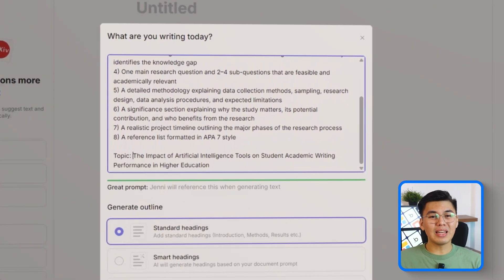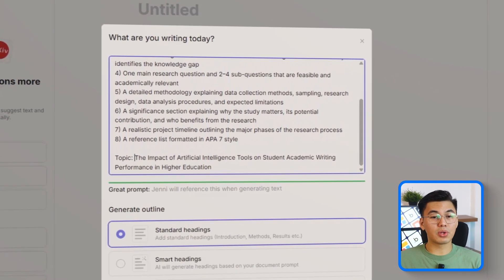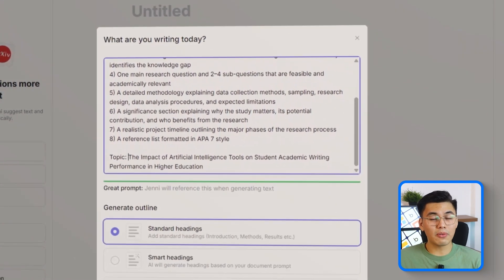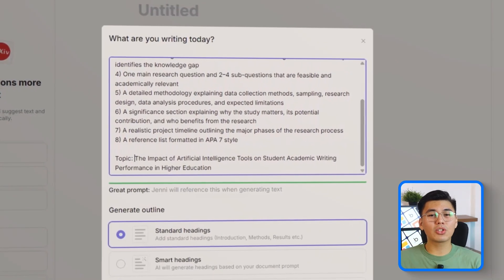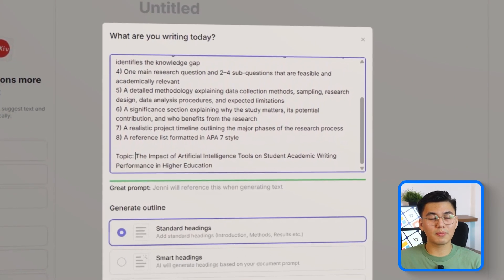Six, a significance section explaining why the study matters, its potential contribution, and who benefits from the research. Seven, a realistic project timeline outlining the major phases of the research process.